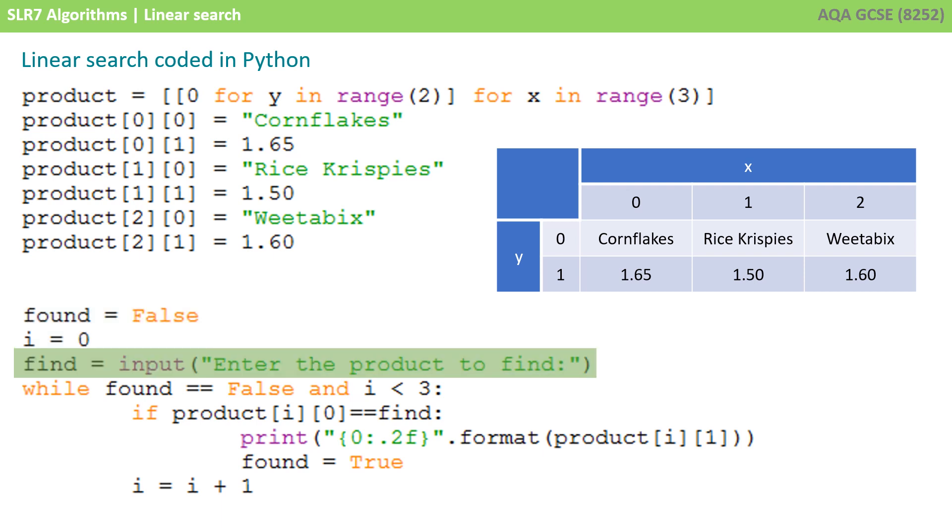We're asking the user what's the product they want to find. And whilst that's not been found and we haven't reached the end of the dataset, we're going to check if the product matches the one we're looking for. And if it does, we're going to print to the screen the price with two decimal places and set found to be true because we don't need to check any other products. This makes the algorithm just a little bit more efficient.